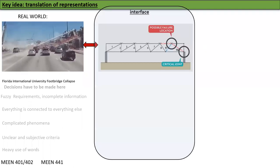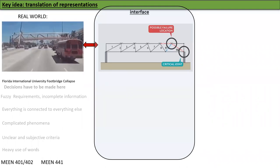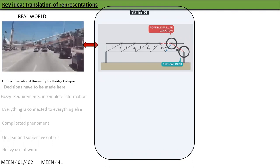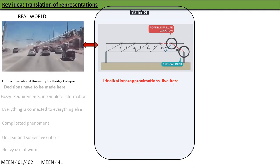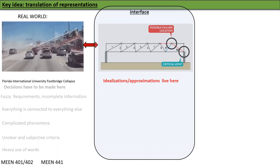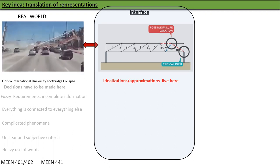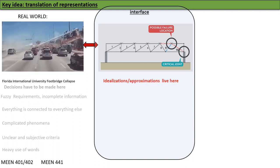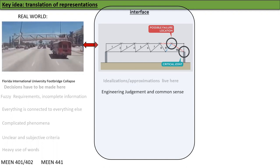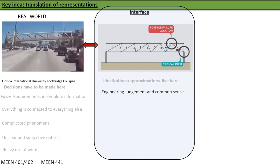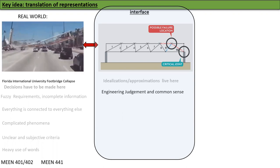But what we do in order to help us to deal with some of the situation is to create what is called the interface world. Here, we do idealizations and approximations. Notice how that actual bridge became this nice little drawing here and no more messy stuff is gone.